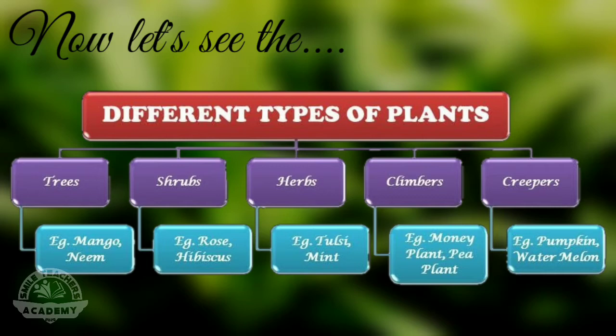Climbers — example, money plant, pea plant. Creepers — example, pumpkin, watermelon.